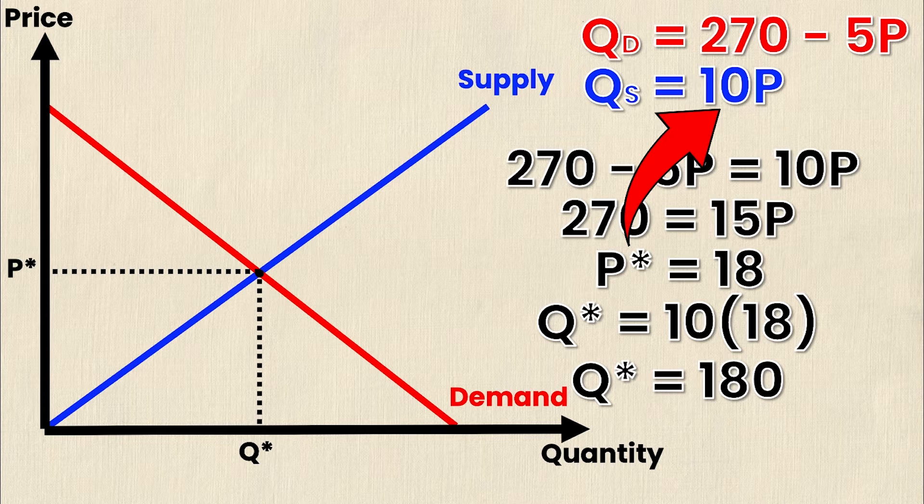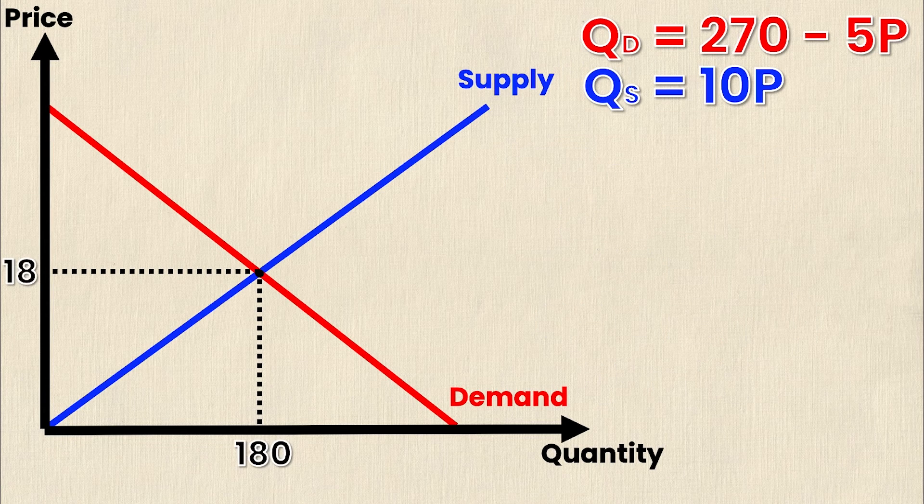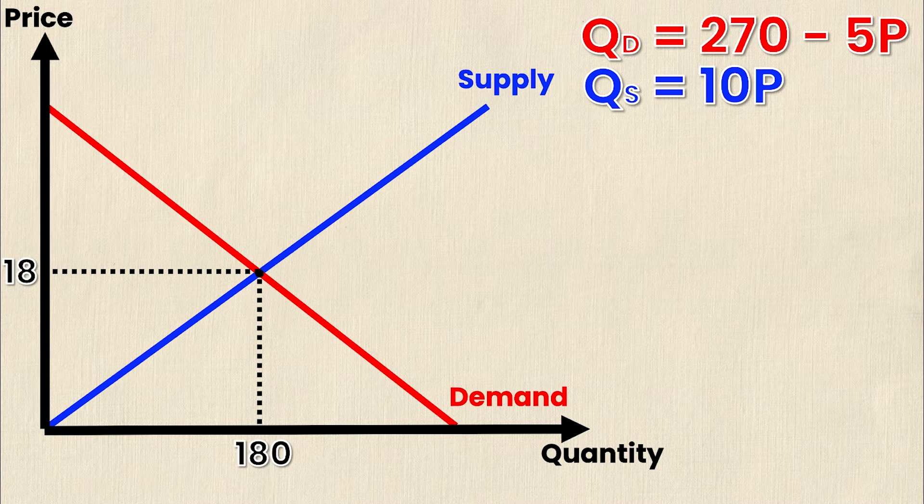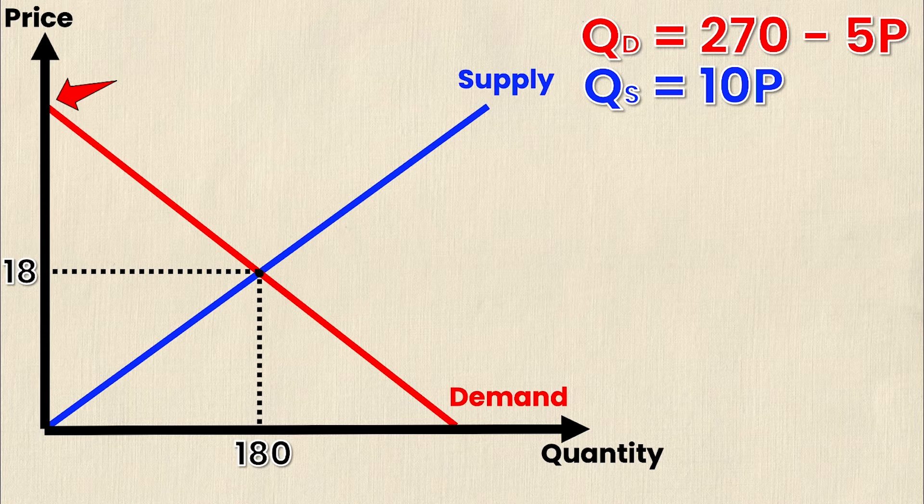So let me transfer those values onto my graph. Now that they're labeled on my graph instead of Q star and P star I actually have their values I'm looking for two more points. That is where the demand curve intersects the price axis and where the supply curve intersects the price axis. So these are the last two points I need to calculate consumer and producer surplus. So how do I do that again?